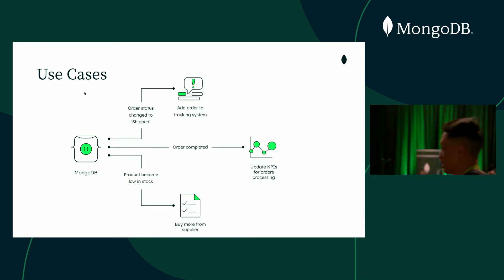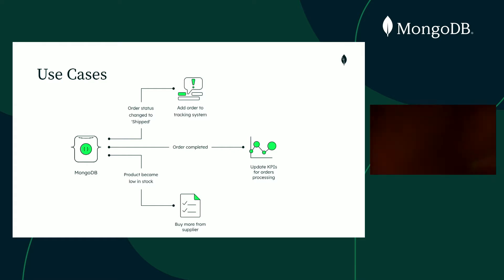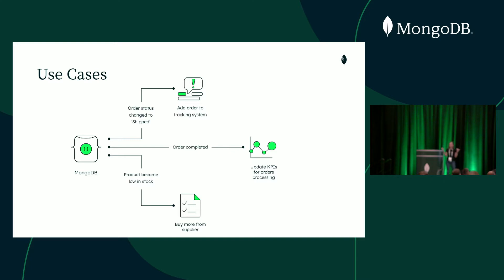Why you might be interested in change streams — here's one example use case. Let's say you have an online store. People place orders, you process them, you ship them. Maybe the order has shipped, so the status changed, and now you want to add that order to a tracking board where you track it with USPS and see if it's stuck. Then maybe the order is completed and you want to update your metrics showing how quickly you process orders. Or maybe inventory went down and the product is low in stock.